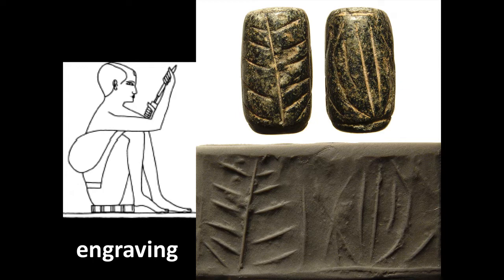This engraving would have been done possibly with a chip of a harder stone like quartz, embedded in some sort of wooden or metal tool. It's also possible they could have used a flint stone and simply gouged the marks with it. Some metals can also make marks in the softer stones. Most of the early versions of these cylinder seals tended to be made of fairly soft stones.